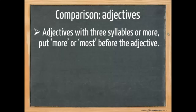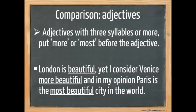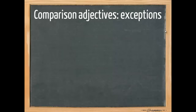Adjectives with three syllables or more just simply put more or most before the adjective. So more for the comparative and most for the superlative. London is beautiful, yet I consider Venice more beautiful and in my opinion, Paris is the most beautiful city in the world. Now, obviously, there are some exceptions.